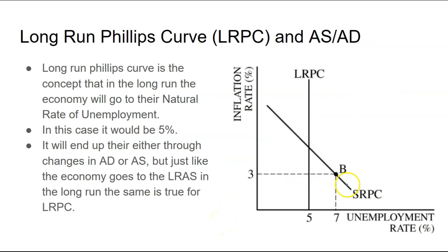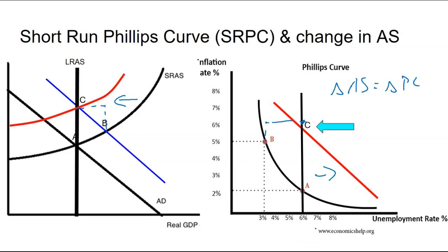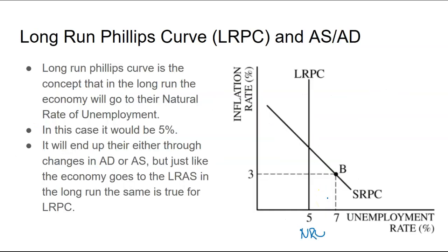The long-run Phillips curve is the natural rate of unemployment. We started out at full employment, and eventually we go back to our full employment — 6% according to this example. The long-run Phillips curve says that eventually you will go back to the natural rate of unemployment as reflected by the LRAS. What happens if the LRAS shifts? Then the Phillips curve honestly just cannot adjust for that.